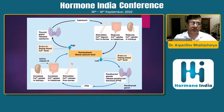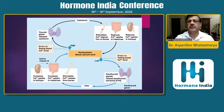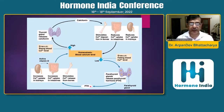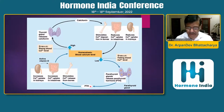High parathyroid hormone gives higher calcium. So basically, it's a balance of three organs — bone, intestine, and kidney — and three hormones — vitamin D, PTH, and calcitonin — maintaining calcium in the blood at a correct level. Below that level there is a problem, and above it there is also a problem.